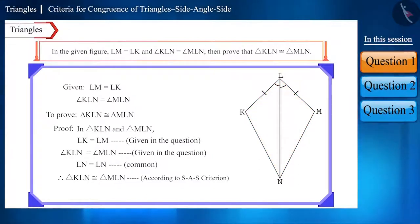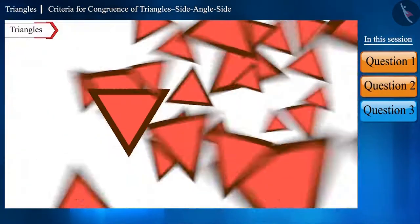And friends, while writing congruent triangles, write their names in the same order in which their sides and angles have one-to-one correspondence or in the order in which they are congruent to each other. Let's move to the next question.